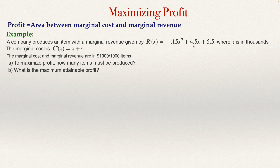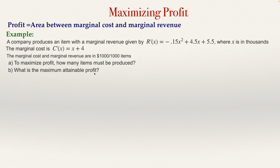Assume that we know both — an expression for the marginal revenue and an expression for the marginal cost. We have two questions: to maximize profit, how many items must be produced? And second, what is the maximum attainable profit — how much is the total profit after we produce all the units that we need to produce?